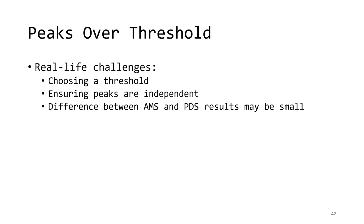Second, it can be difficult to ensure that the peaks are independent, especially for streamflow. For precipitation, this is generally much easier because storm events can be separated by periods of no rainfall. In streamflow, it generally requires setting a minimum amount of time between subsequent events and a value that the flow must go below between events in order for them to be considered independent.